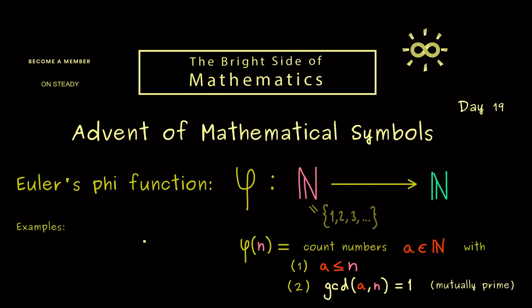Now, if you have never seen this greatest common divisor, then I think examples will help. For example, what is φ(4)? Now because of property 1, we already know we only have to look at the numbers 1, 2, 3, and 4.